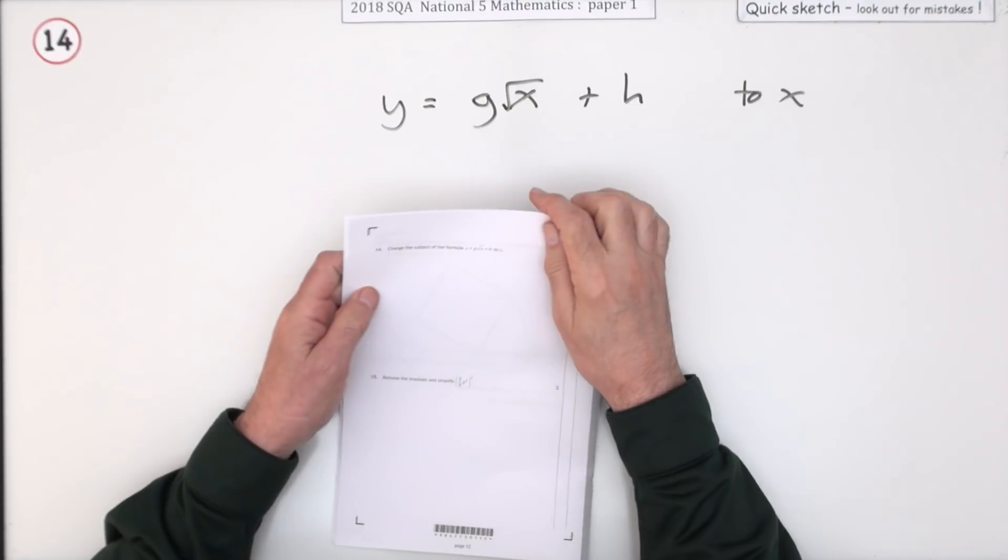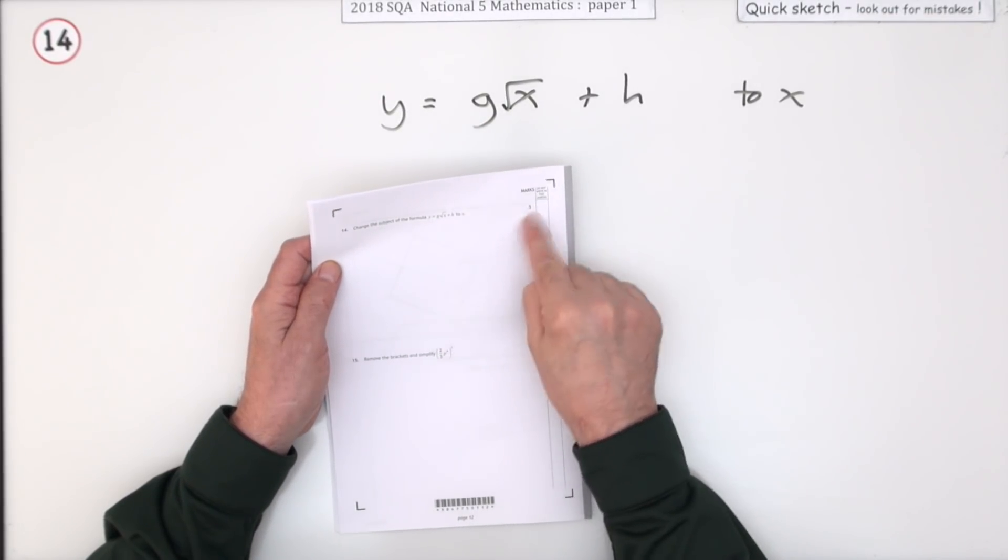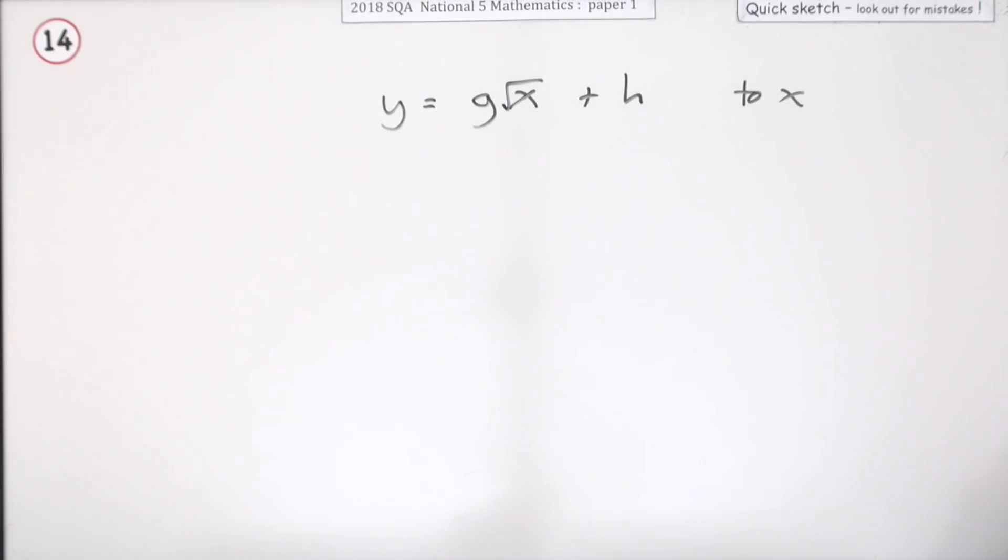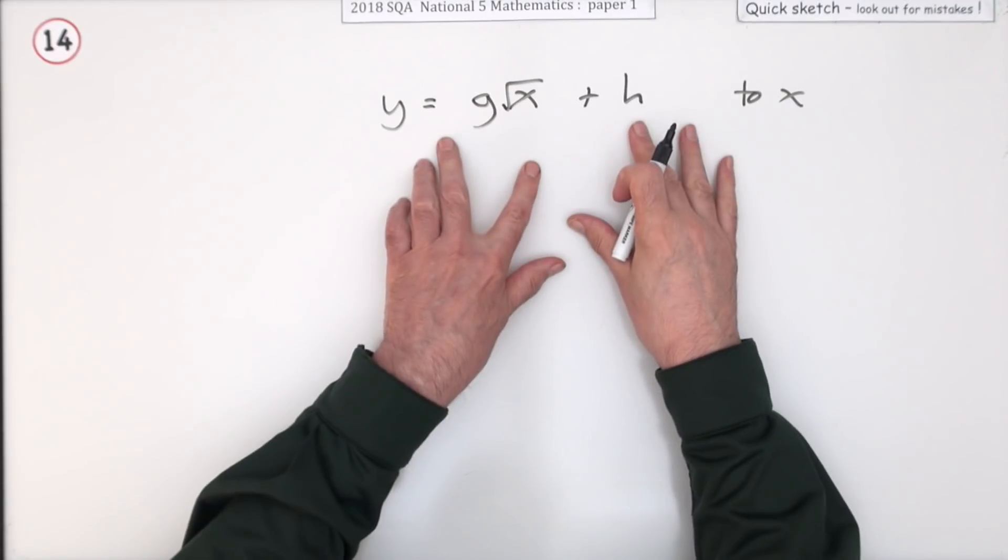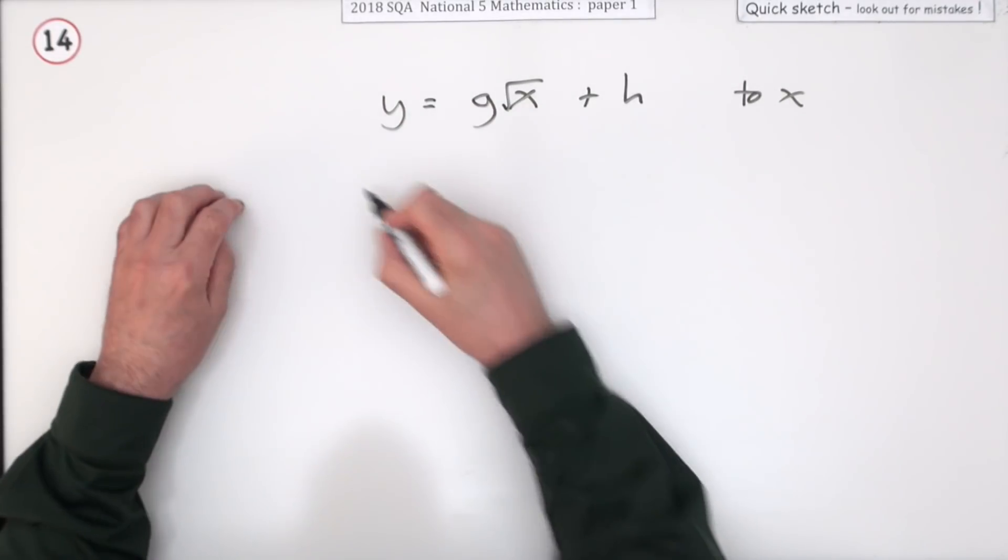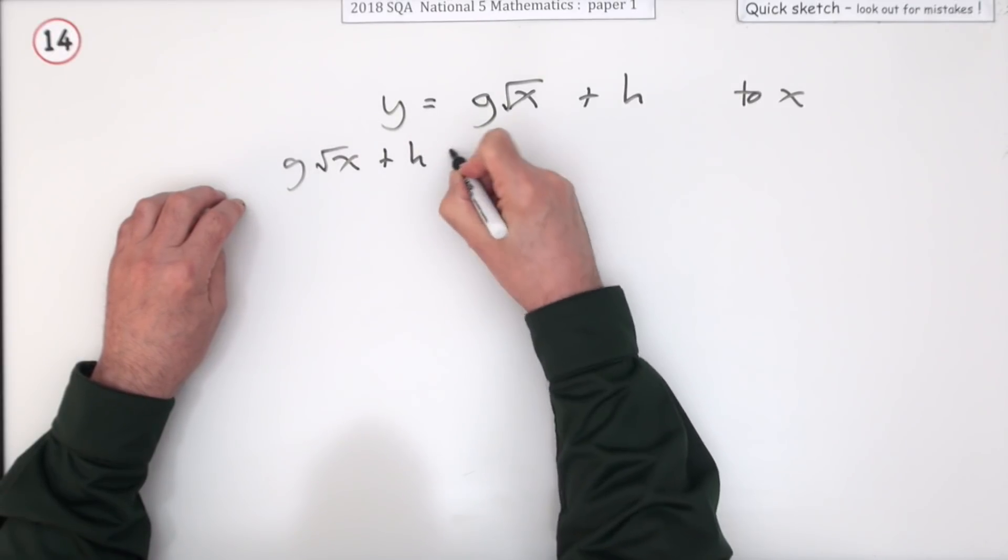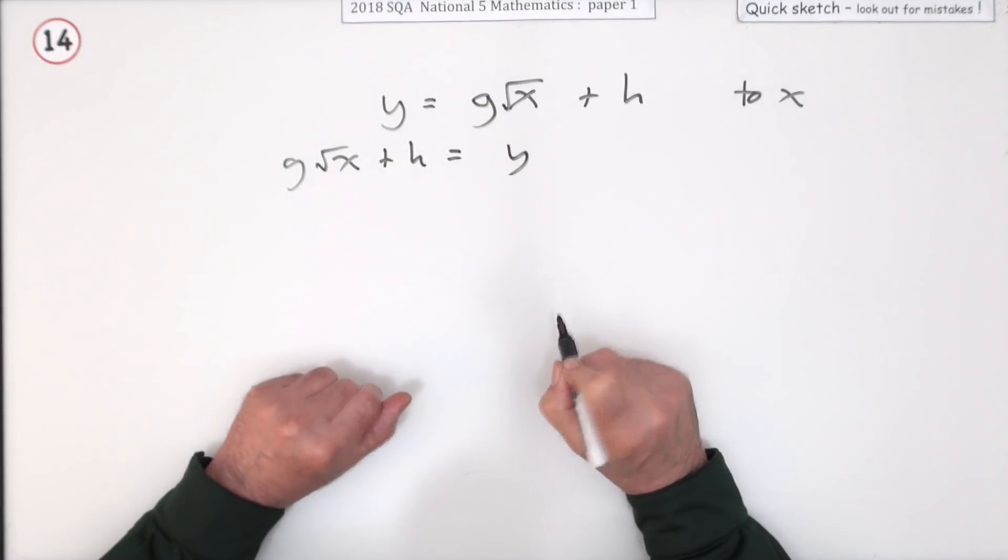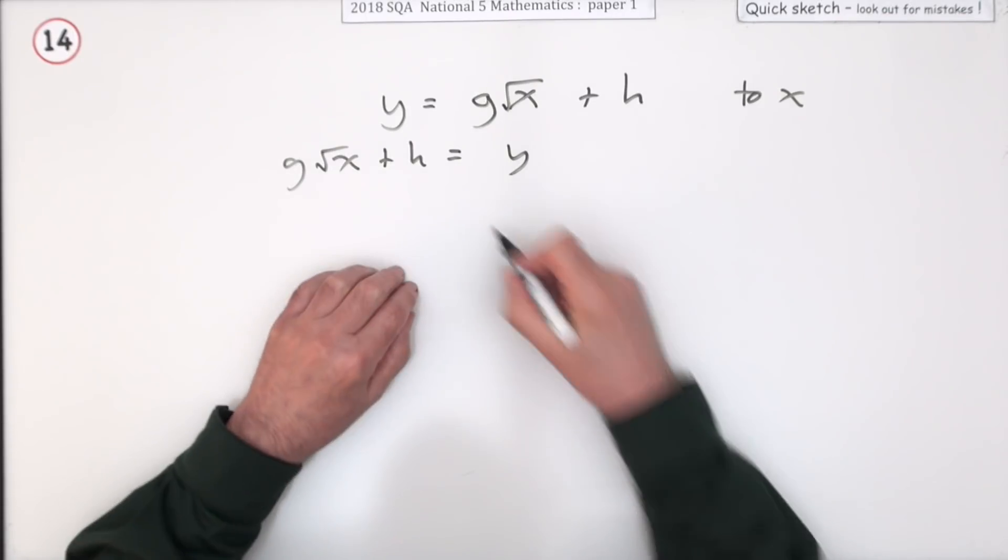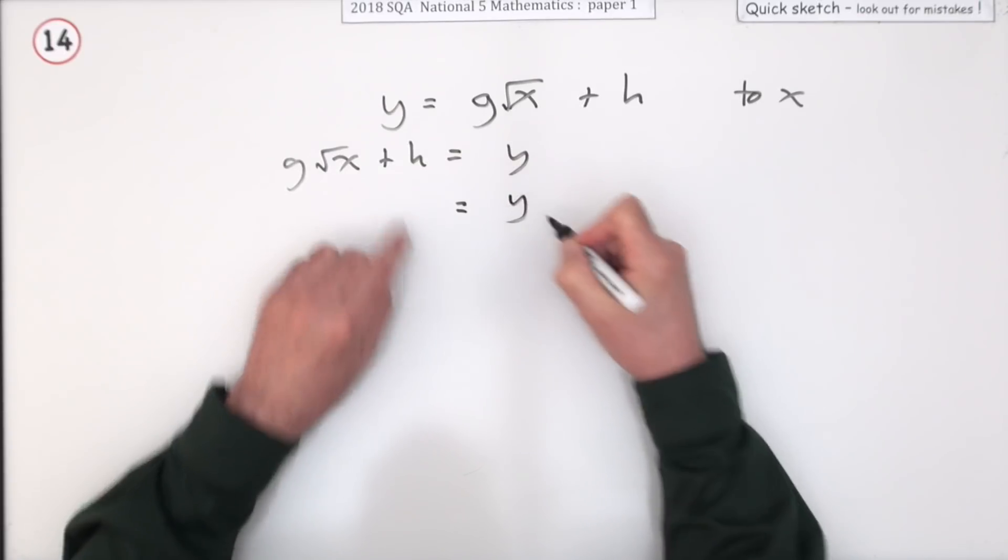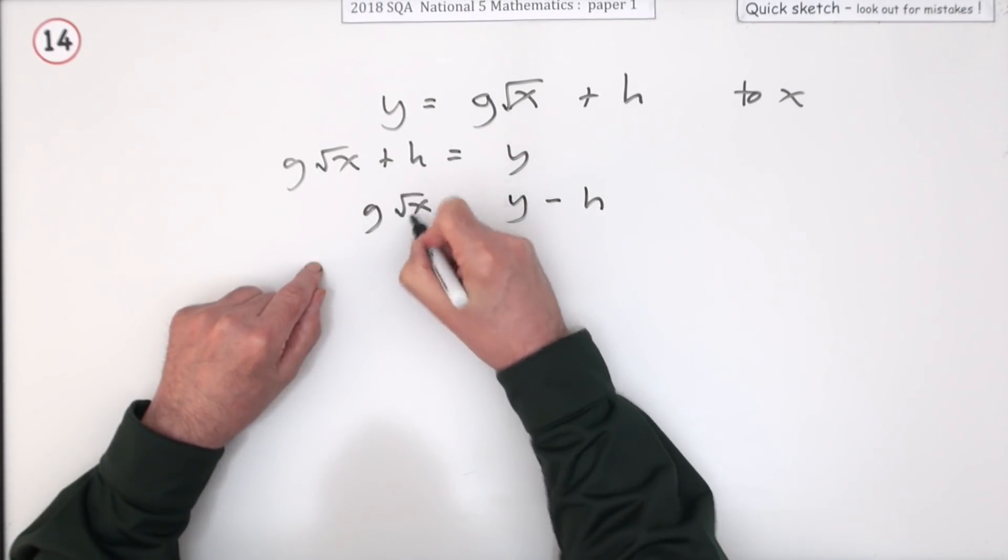Number 14 from paper 1 of the 2018 National 5. Change the subject of a formula for three marks. Change the subject of this formula to x. Well x is on this side just now, so let's reverse it all and put the sunny side of the equal sign: g√x + h will equal y. Now it's just a case of getting rid of all the bits and pieces until you eventually end up with x. That h can go first—it's added, so take it across and subtract. That leaves just g√x.